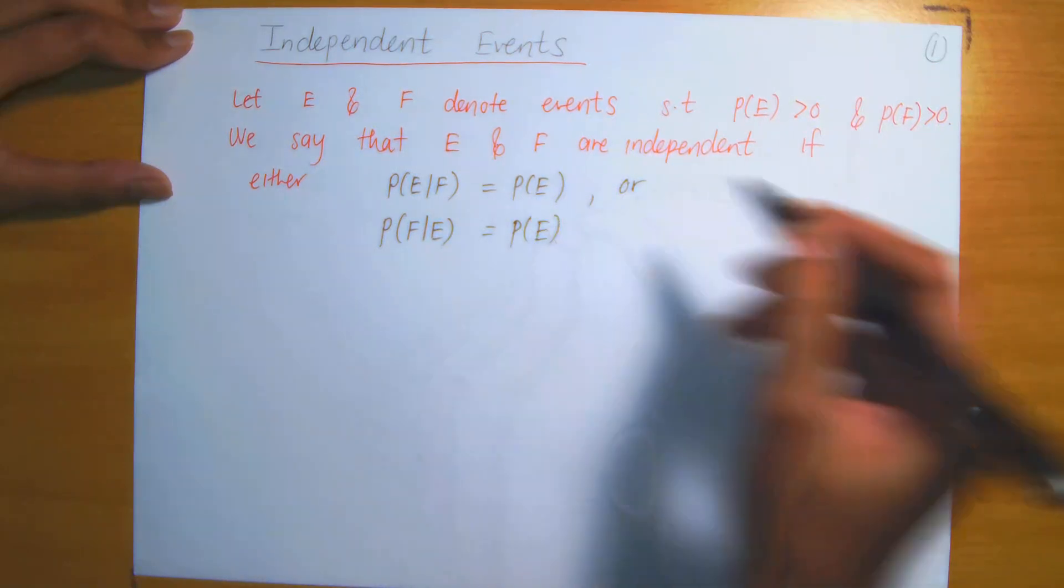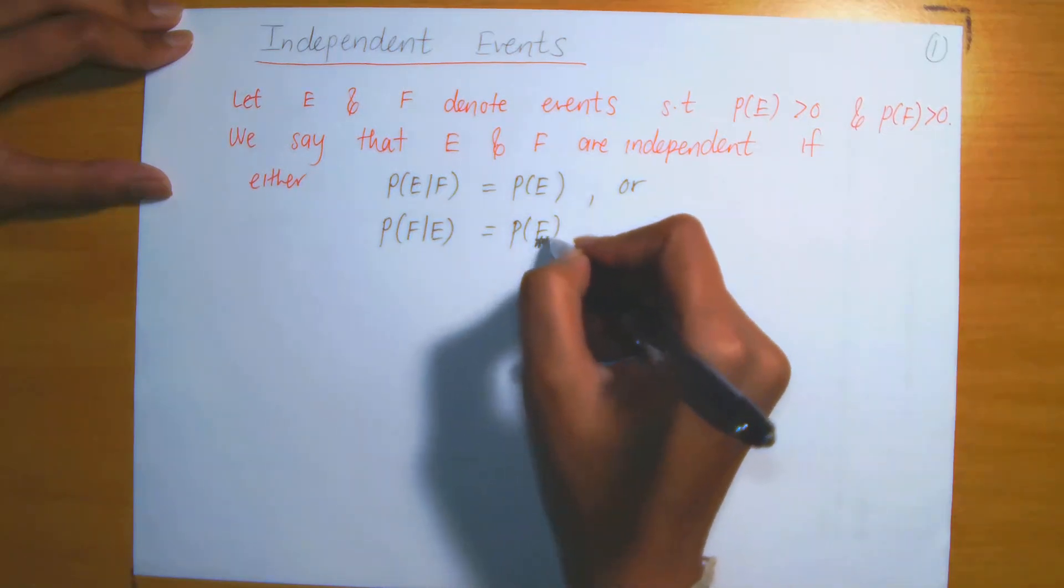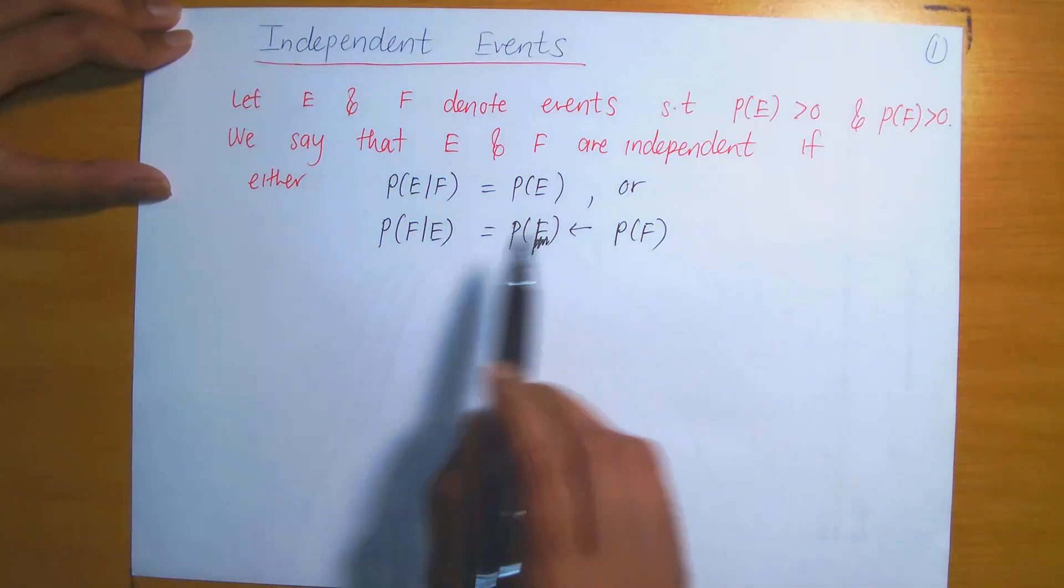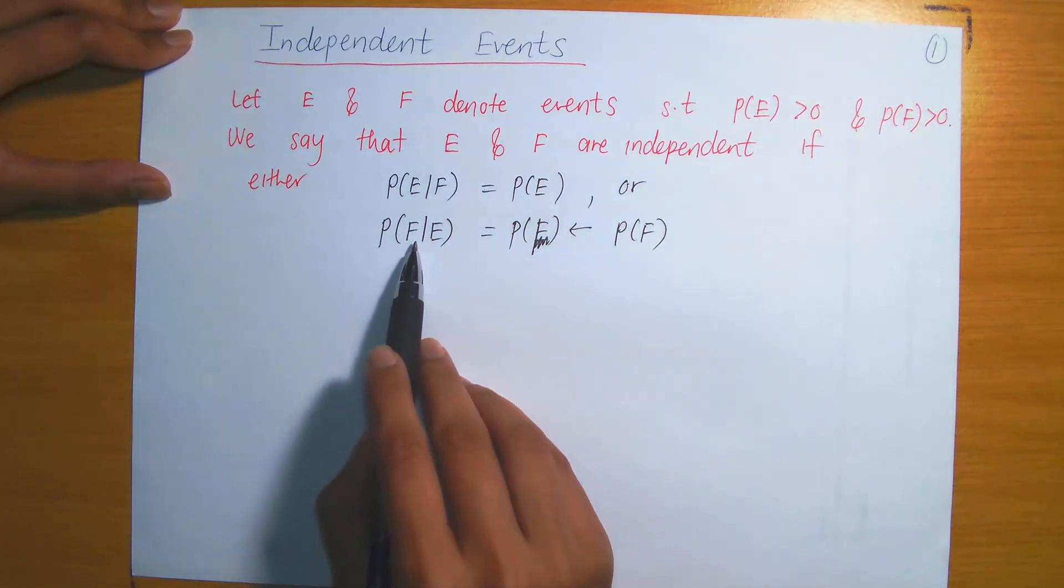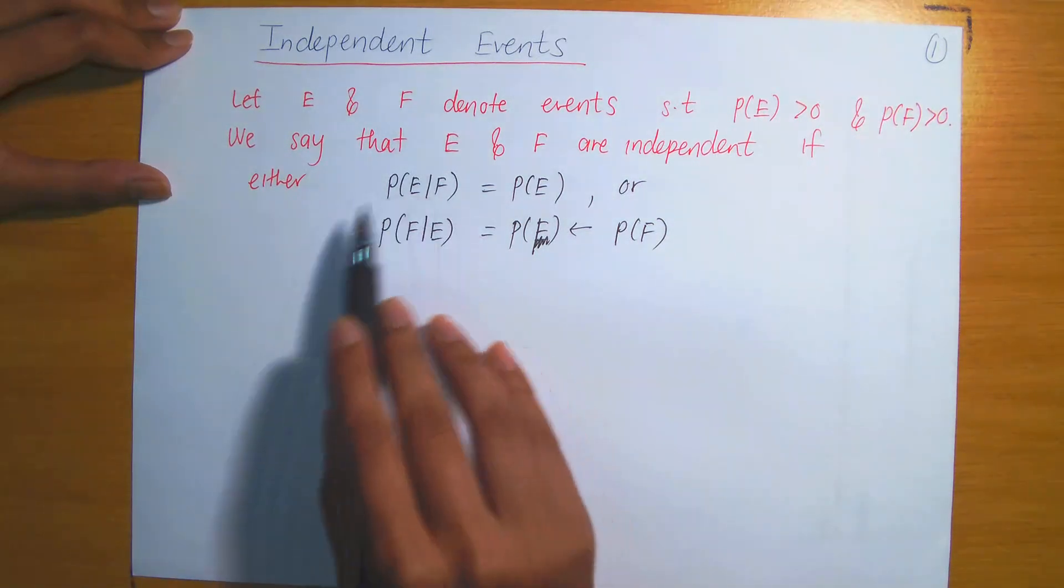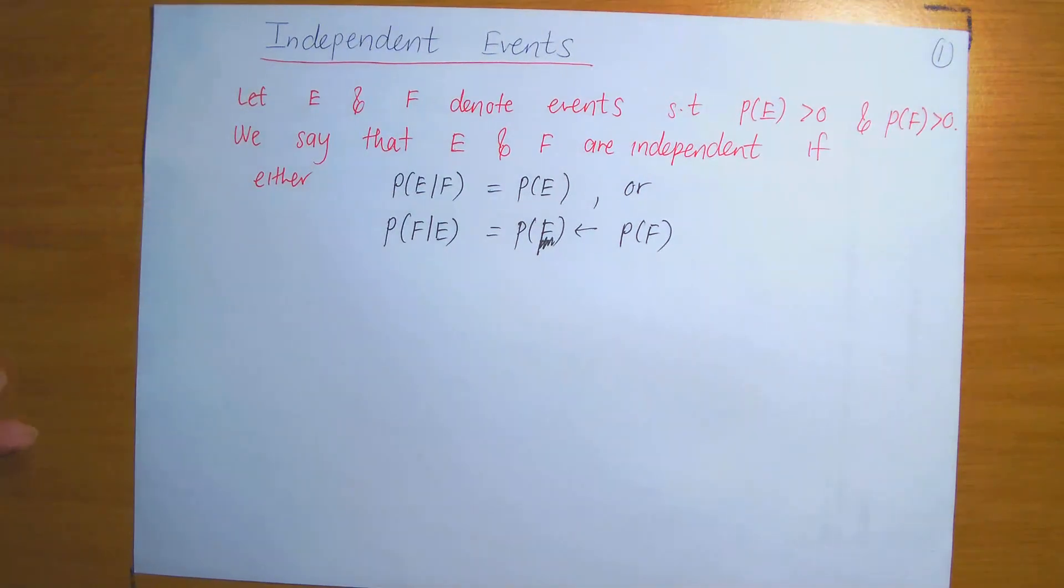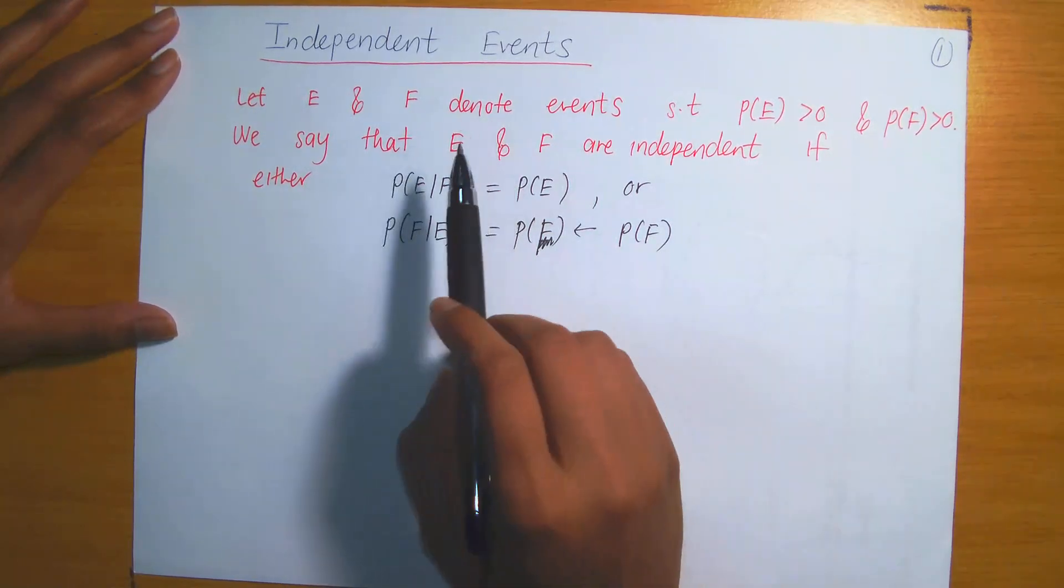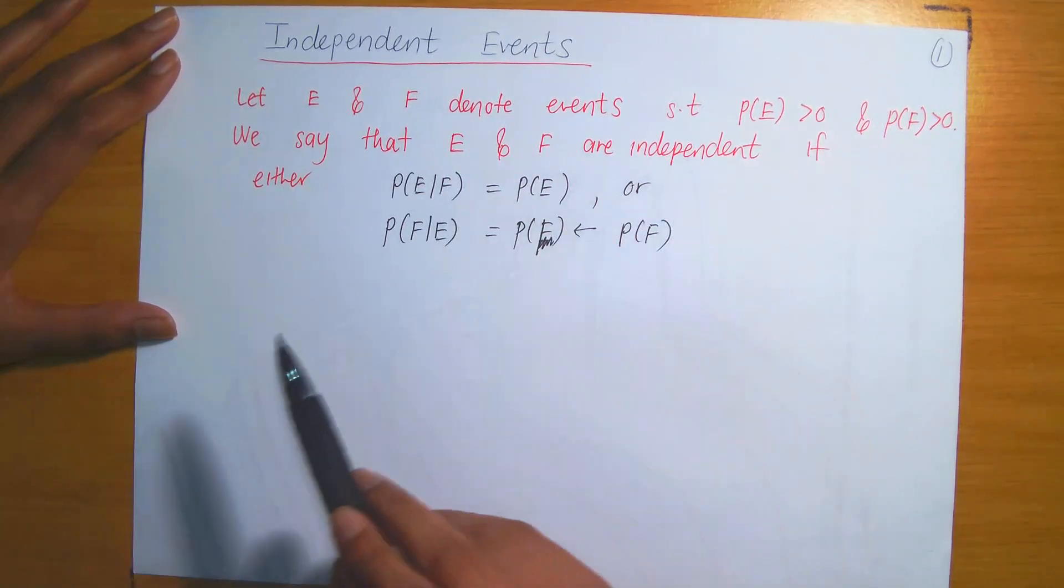And here I meant to write down F. I think I said F but wrote down E instead. So remember, this is the probability of F. Either that or the second statement which says that the probability of F given that E has occurred. This conditional probability is equal to the probability of F occurring. This is basically conditions that you could use to verify if two events are independent or not. If these two events are not independent, meaning they do not satisfy these conditions, then we say that they are dependent.